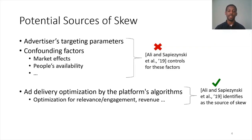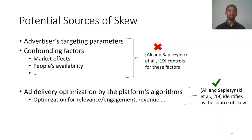In their methodology, they control for these factors. And instead, what they show is that the skew they observe is due to ad delivery optimization by the platform's algorithms. The platform optimized for goals such as relevance and engagement or revenue, and in their work they show that such hidden optimizations can result in skewed ad delivery, even though the advertiser targeted a balanced audience.